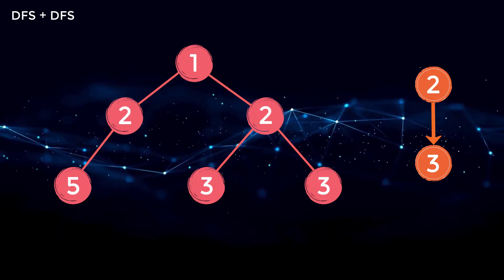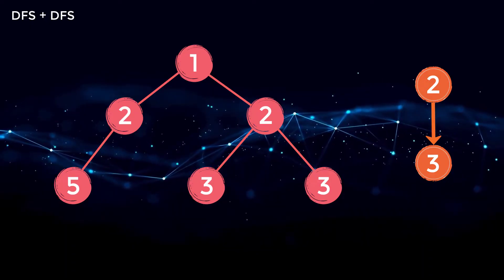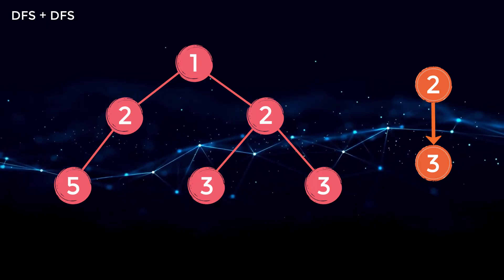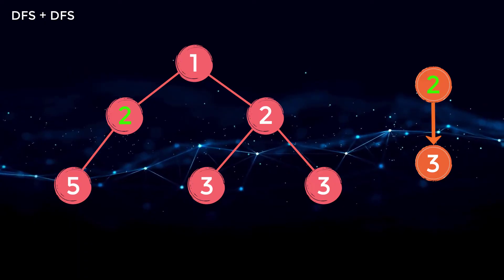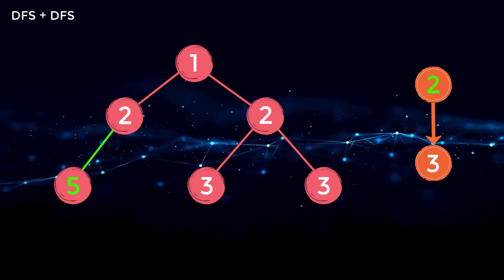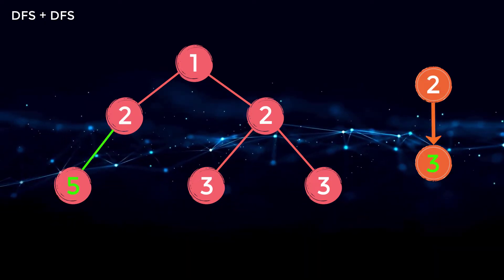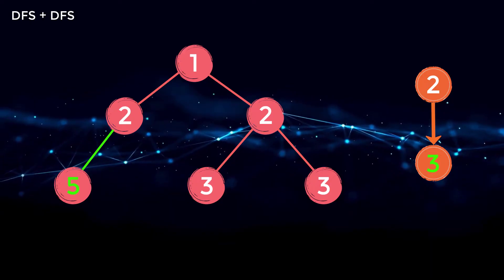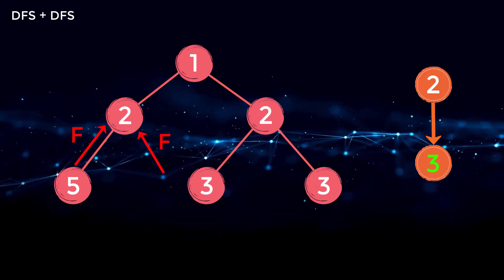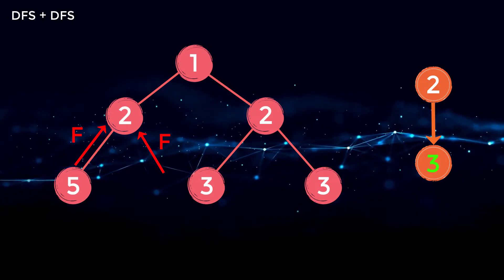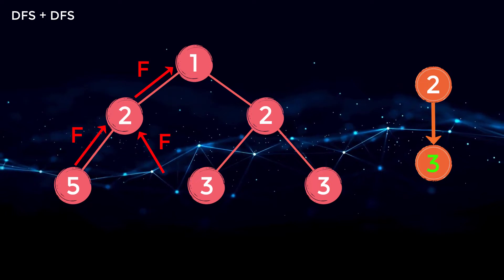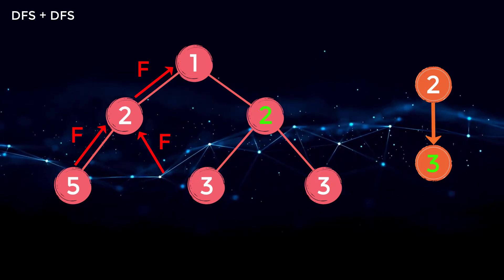Now let's look at the DFS plus DFS solution, which is a bit easier to understand. The only parts that differ from the previous approach are what happens when we find the head of the linked list and search for the rest. Starting from the two on the left side, instead of performing a BFS we do a DFS. We check if the left node has a value of three — the next node in our linked list — it doesn't, so we return false. The right node is null so we return false as well, and false or false is false, returning false to node two.